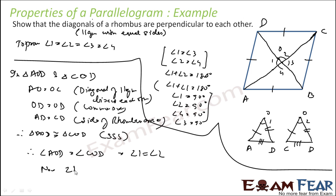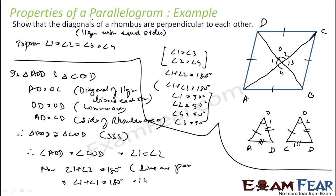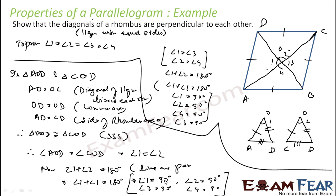Now we know that angle 1 + angle 2 = 180°. Since angle 1 = angle 2, we get angle 1 + angle 1 = 180°, so angle 1 = 90° and angle 2 = 90°. Since angle 1 = angle 3 (vertical opposite), angle 3 = 90°. Since angle 2 = angle 4 (vertical opposite), angle 4 = 90°. Thus all four angles are 90°, and the diagonals of the rhombus are perpendicular to each other.